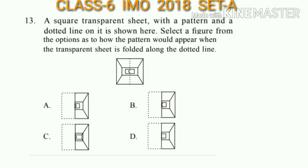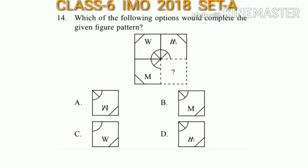Question number 14: Which of the following options would complete the given figure pattern? The second figure is the water image of the first figure, so the fourth figure will be the water image of the third figure, which is option A.